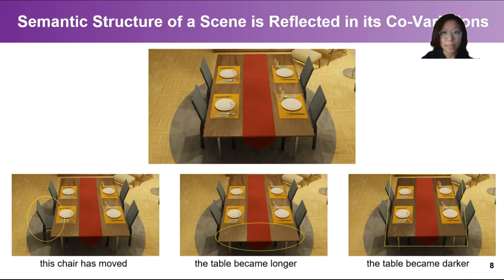Our key insight is that the semantic structure of a scene is reflected in its covariations. That is, the change in one point should maximally inform the change of other points on the same semantic structure. For example, in an indoor scene, when we move a chair, all the points on the chair move together but not the others.